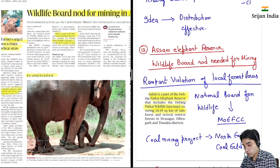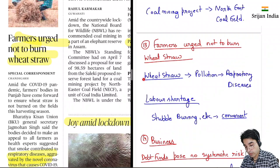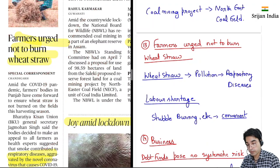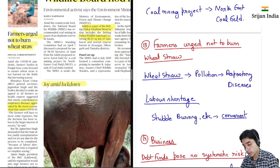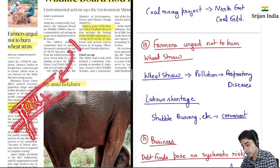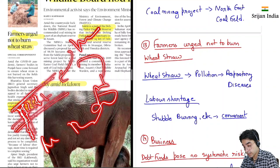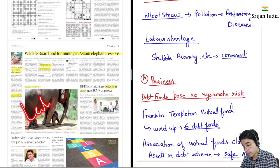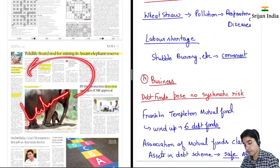Farmers urge not to burn wheat straw — wheat ka jo straw hota hai, isko farmers aksar burn kar dete hain kyunki yeh kaafi convenient hota hai, but isse pollution hota hai, respiratory diseases hoti hai. Stubble burning ek bahut bada headache hota hai — stubble matlab jisme aapne wheat ka harvest kar liya, ab jo stubble bacha hua hai woh thodi thodi toot type ke nikle rehte hain. Isko kaatne ke bajaaye yeh kya karte hain, is par aag laga dete hain, aur isse pollution hota hai. Winters mein Delhi and NCR mein bahut pollution spike ho jaata hai. Yeh convenient hota hai kyunki yahan labor ka shortage hai, but avoid this.